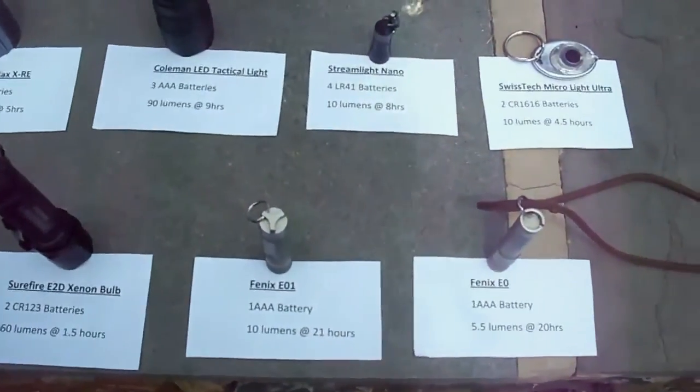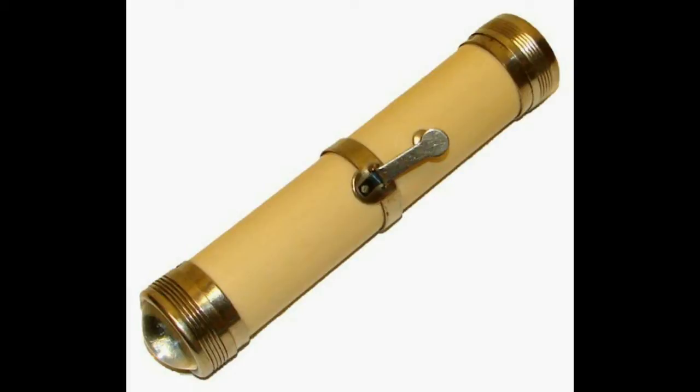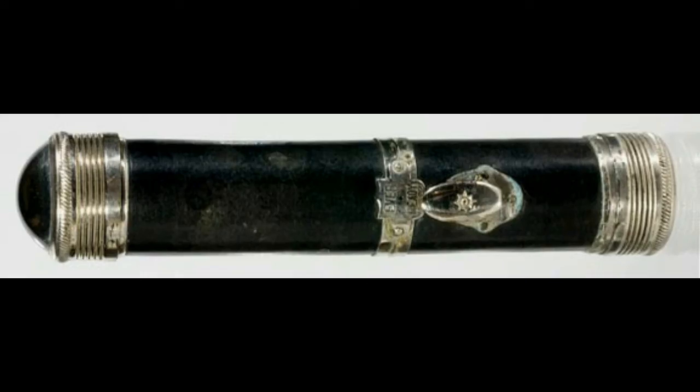Well to get the answer to that, we have to dive into a little bit of history. An English inventor named David Missell filed for a patent in 1898 for a device that was powered by D batteries that were laid front to back in a paper tube with a light bulb and a rough brass reflector at the end.